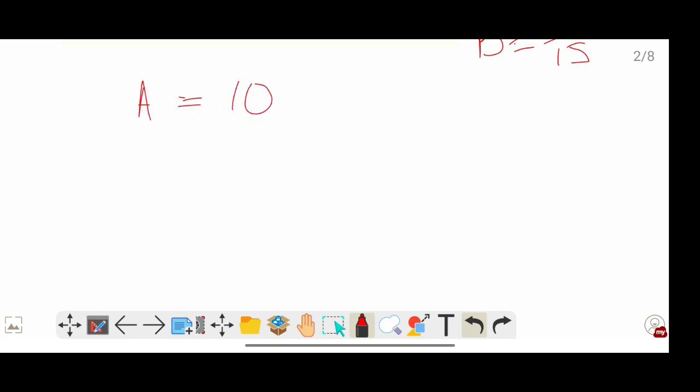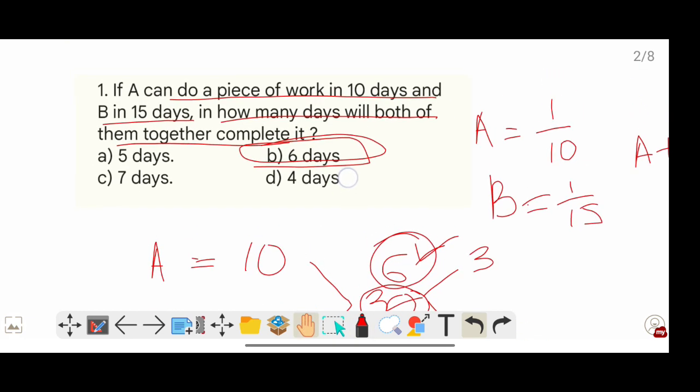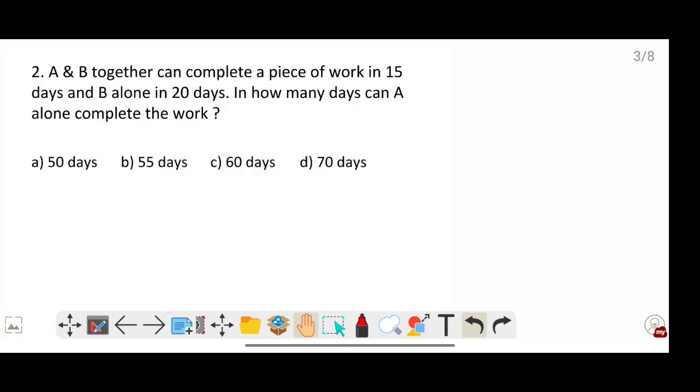There's also a shortcut formula that will be more easy. A is 10 days, B is 15 days. 10 times 15 is 30 divided by 10 plus 15 equals 30 divided by 25, wait - 3 plus 2 is 5, so 30 divided by 5 equals 6 days.